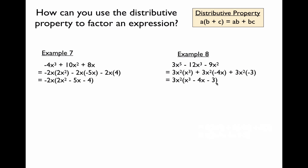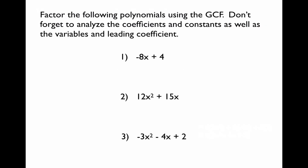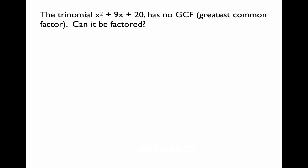That's a quick review of factoring using the greatest common factor. Here are three practice problems. You should have gotten: negative 4 times the quantity 2x minus 1; 3x times the quantity 4x plus 5; and negative 1 times the quantity 3x squared plus 4x minus 2. In that last one, there were no common numeric factors, but because the leading coefficient is negative, you factor out negative 1. You'll be using GCF factoring as part of our next lesson: factoring trinomials.